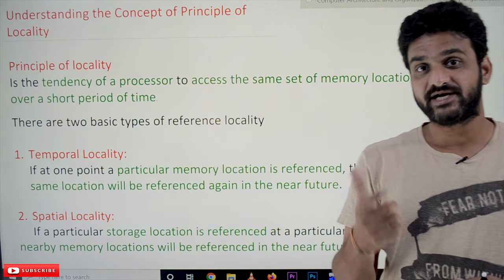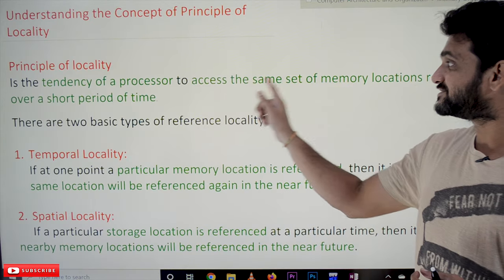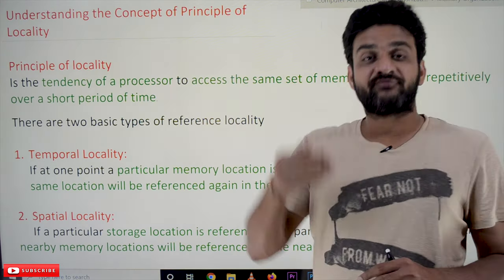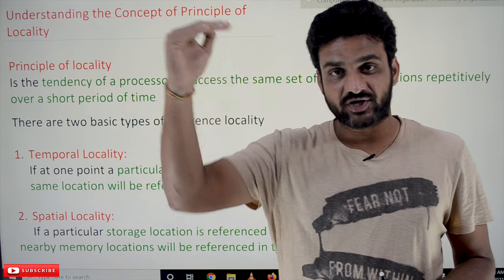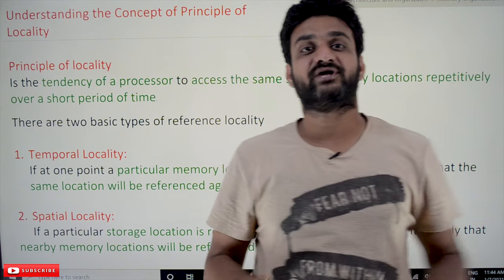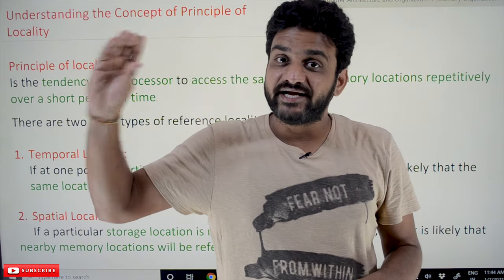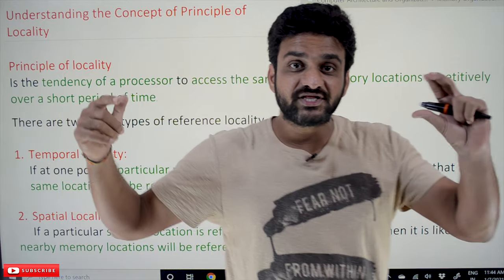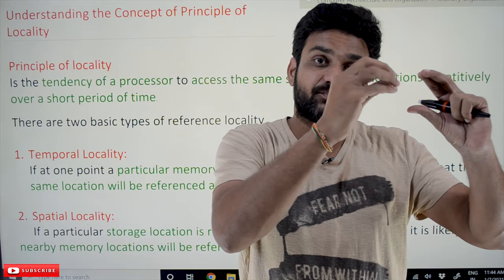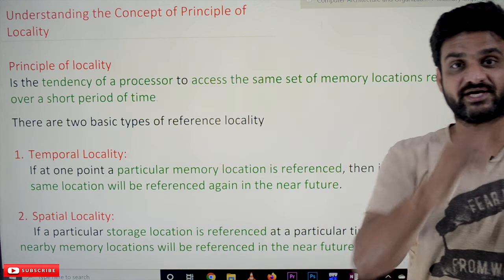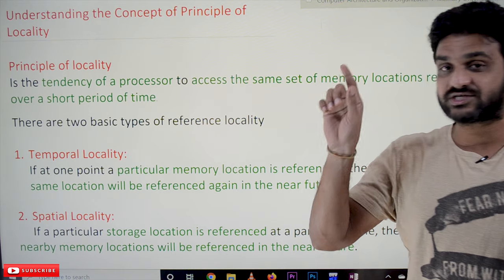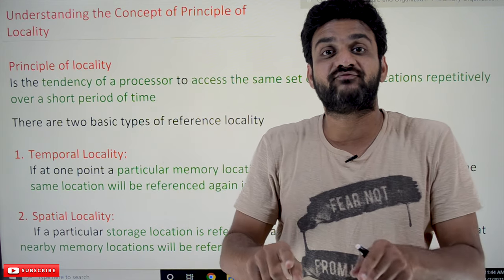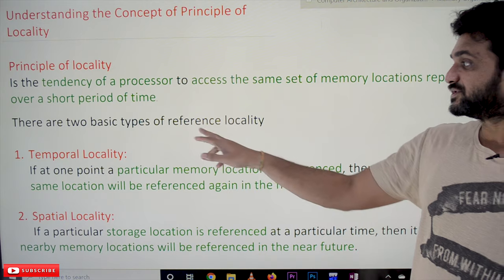Principle of locality states that it is the tendency of the processor to access the same set of memory locations repetitively over a short period of time. For example, if the processor is executing a program, within a short period of time it usually happens that the processor is going to access the same set of memory locations again and again. That is what we call the principle of locality.